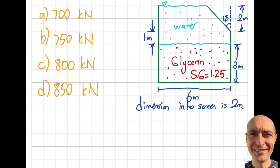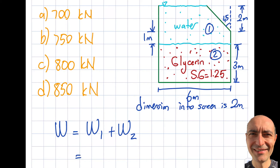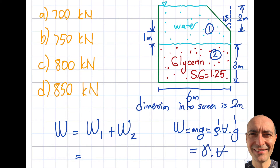What I have to do is obtain the weight of the fluids: Weight 1 plus Weight 2. This weight is mg, which we know from solid mechanics. We prefer to write it as rho times volume times g. The product of rho and g is the specific weight, so we get specific weight times volume. This formula is also supplied in your FE reference manual.